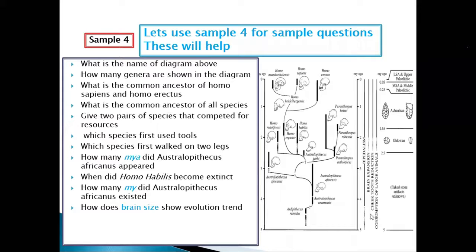How did brain size show an evolutionary trend? Brain size expansion increases over time. The increase in brain size indicates that more brain cells are forming, which indicates higher intelligence. That's the answer from your theory.